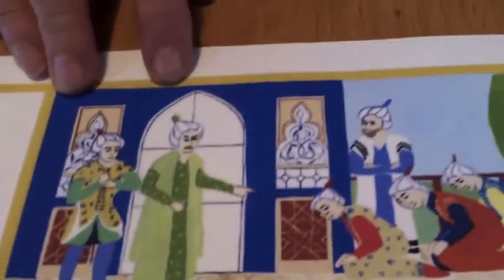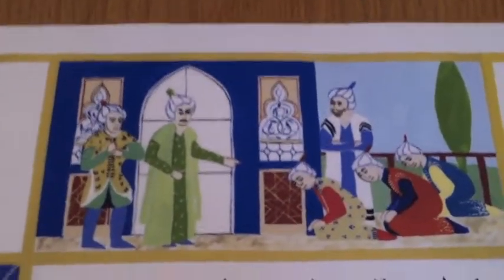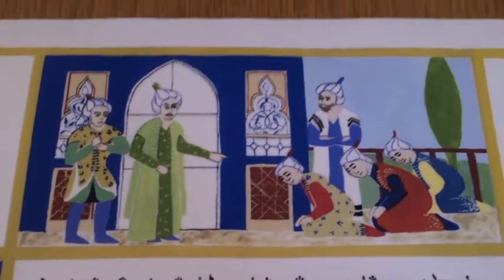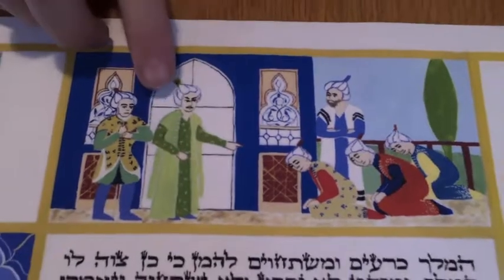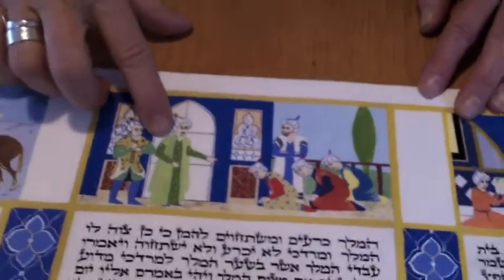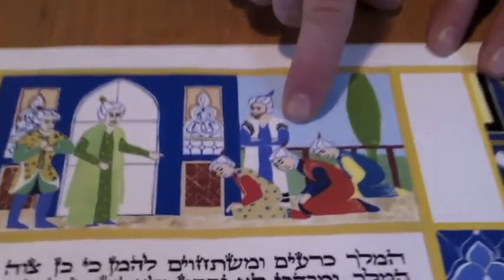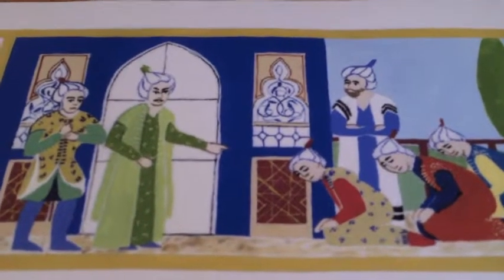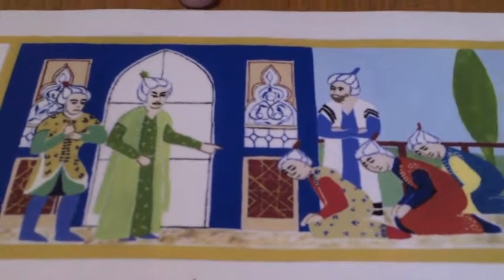Here we see Haman for the first time. Green is the color of purity and religion and spirituality in Eastern religion, but in our culture it's seen as jealousy and envy — and that describes Haman. So I have him dressed in the western color of green. Mordecai refuses to bow down, and Haman gets very angry and decides he's going to destroy the Jews because he can't stand that there's a people who will not bow down to him.